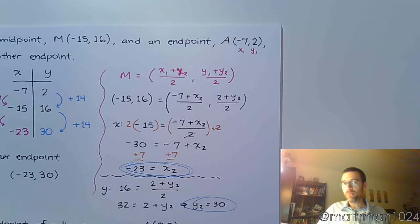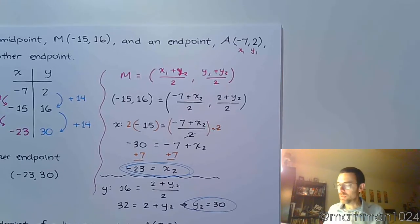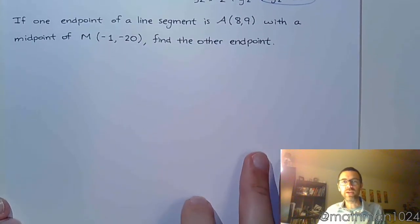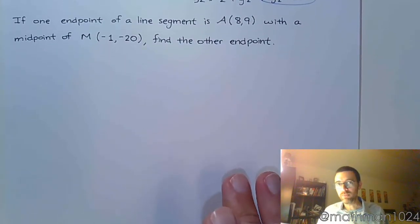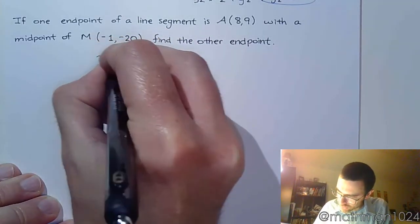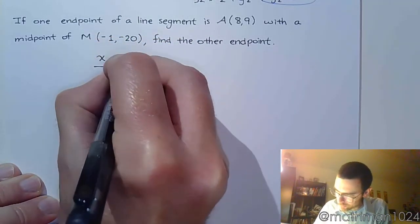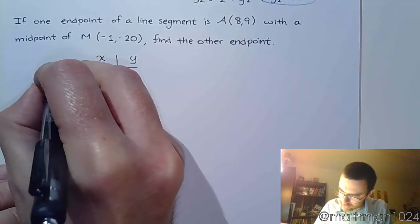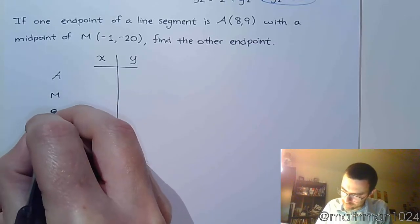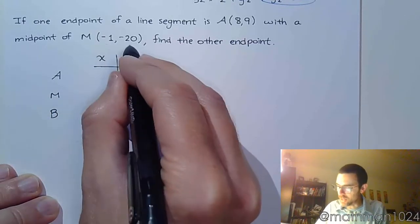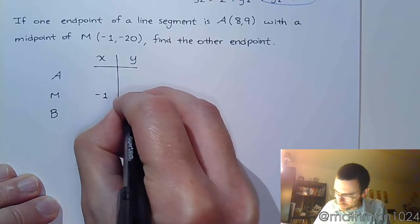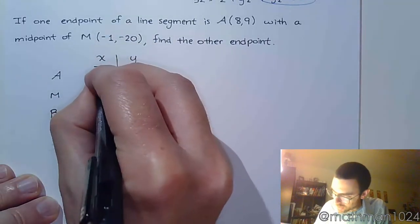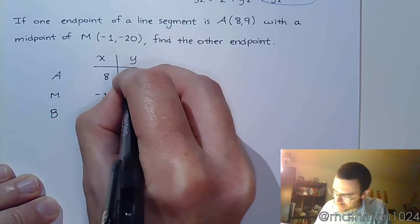So you can do whichever method you want. I know what I'm going to do. So let's look at this next example. In the next example, I'm telling you that you've got an endpoint and you've got a midpoint, just like we had previously. So I'm going to set that up. I'm going to be very careful to make sure that I put my midpoint in the middle. So the midpoint goes in the middle. And the midpoint is right here with the coordinates negative 1, negative 20. And you have one of the endpoints being 8, 9.